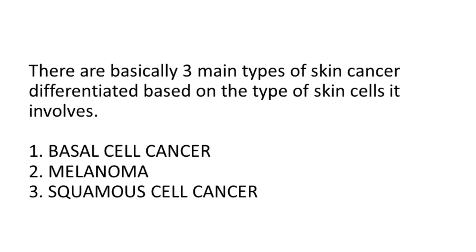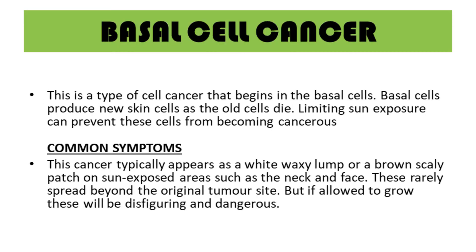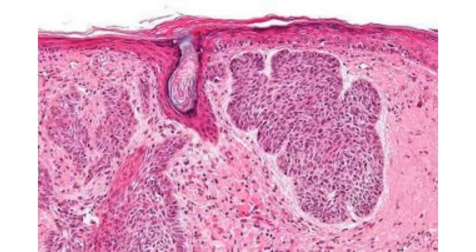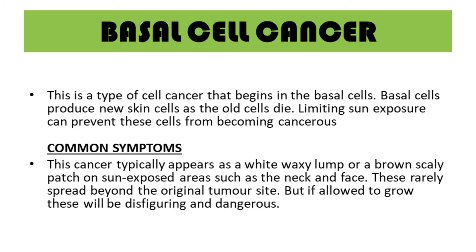Now let's move on to the types of skin cancer. The first is basal cell cancer. This is a type of cancer that begins in the basal cells, which produce new skin cells as the old ones die. Limiting sun exposure can prevent these cells from becoming cancerous. It typically appears as a white waxy lump or a brown scaly patch on sun-exposed areas such as the neck and face. These rarely spread beyond the original tumor site, but if allowed to grow they can be disfiguring and dangerous.